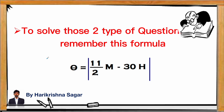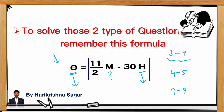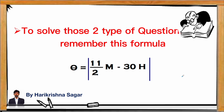To solve Type 2 questions, use the formula θ = 11/2·m − 30h. Here θ and H are given, and we solve for M. For the hour range, if it's 3 to 4 o'clock, take H = 3; for 4 to 5 take H = 4; for 7 to 8 take H = 7, and so on.